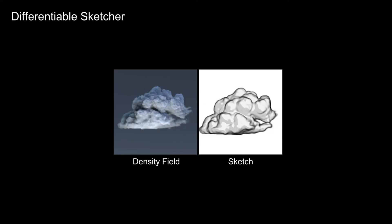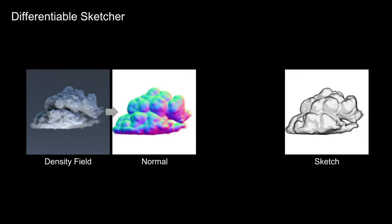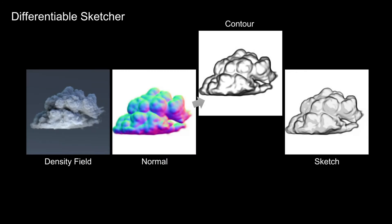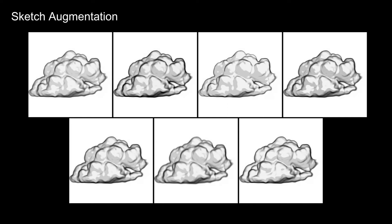At the core of our method is a differentiable sketch generator for smoke volumes, which allows us to compute a sketched representation of the reconstructed density and compare this to the input sketch by using a sketch loss. To increase robustness with respect to variations in artist style,